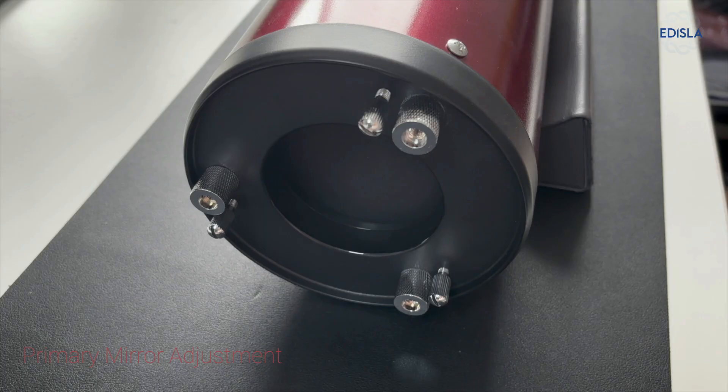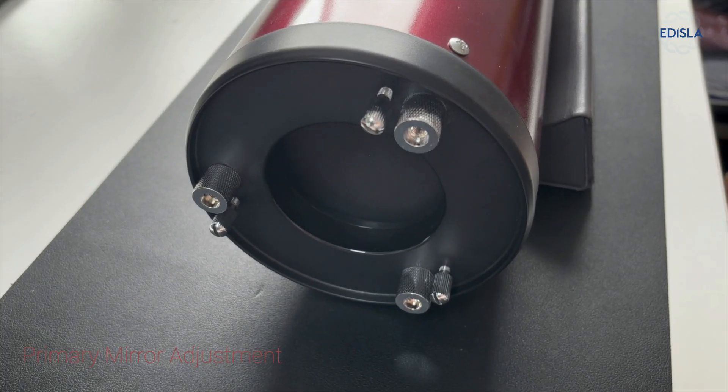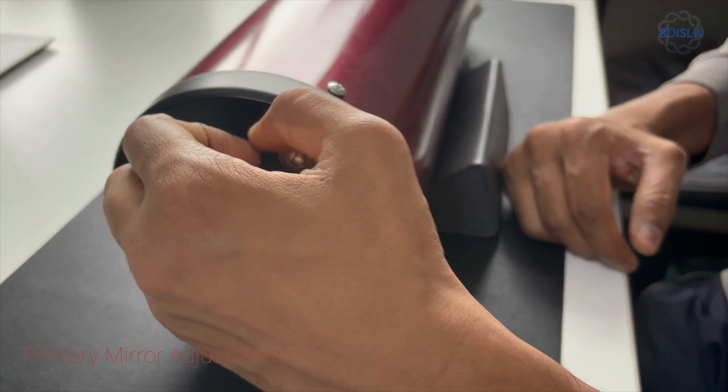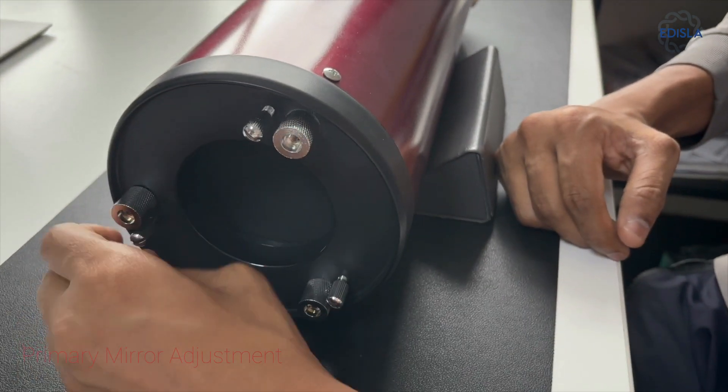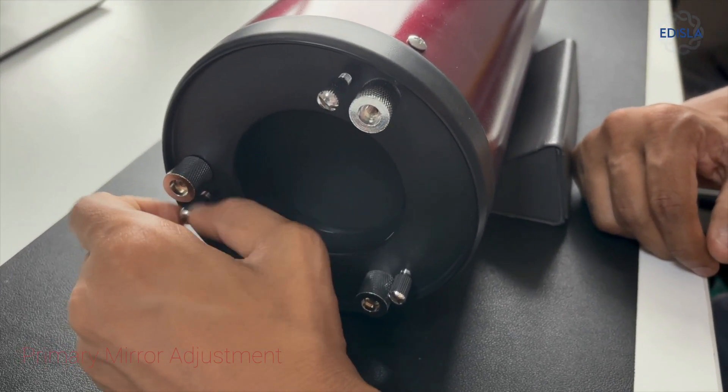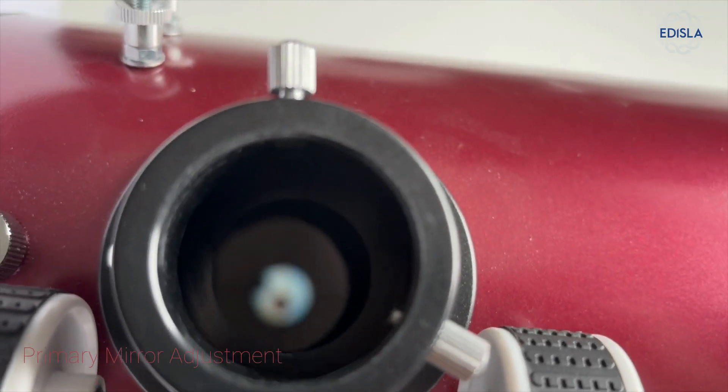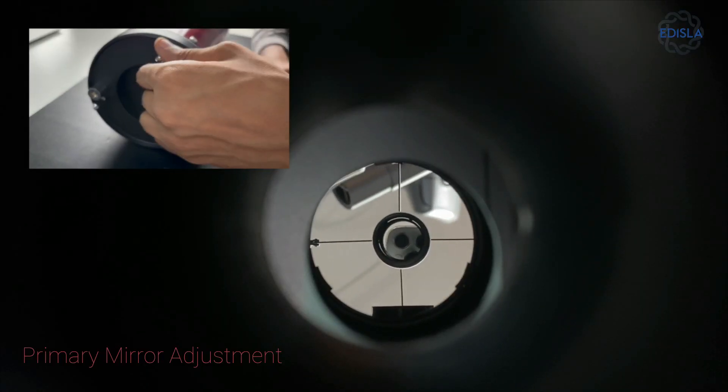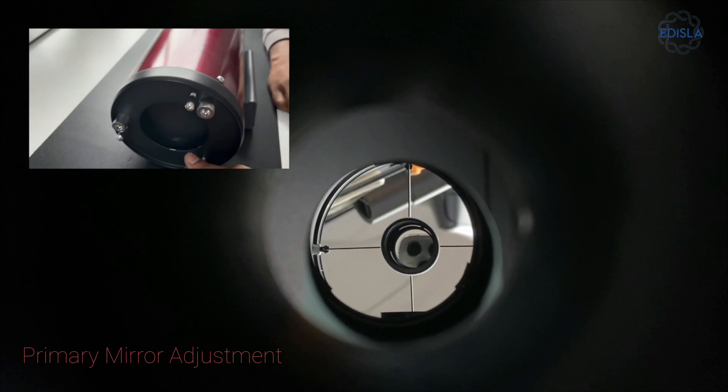Adjusting this requires no tools. Loosen the lock screws at the bottom gently, avoiding complete detachment to prevent voiding your warranty. While looking through the telescope, carefully adjust the larger screws until symmetry is achieved in the quadrants.